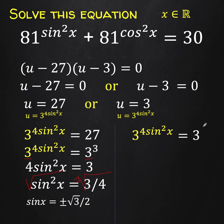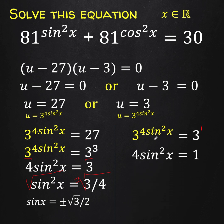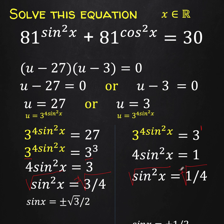At the right side, the exponent of 3 is 1. So again, we have an exponential equation where the bases are the same, meaning the exponents are also equal. Therefore 4 sine squared x equals 1. Dividing both sides by 4 and taking the square root of both sides, we arrive at sine x equals plus or minus 1 half.